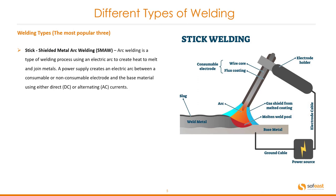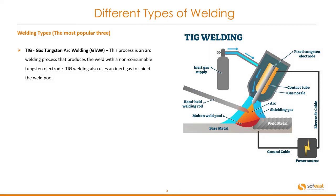The third type we're going to be looking at is stick welding. This is shielded metal arc welding or SMAW for short. Arc welding uses an electric arc to create heat to melt and join metals. A power supply creates an electric arc between a consumable and non-consumable electrode and the base material using either direct or alternating currents — DC or AC. The cross-sectional setup for the stick weld shows an electrode holder, that consumable electrode, and the other elements that make up this weld. This is more of a pull weld scenario, compared to MIG which is more of a push weld type.